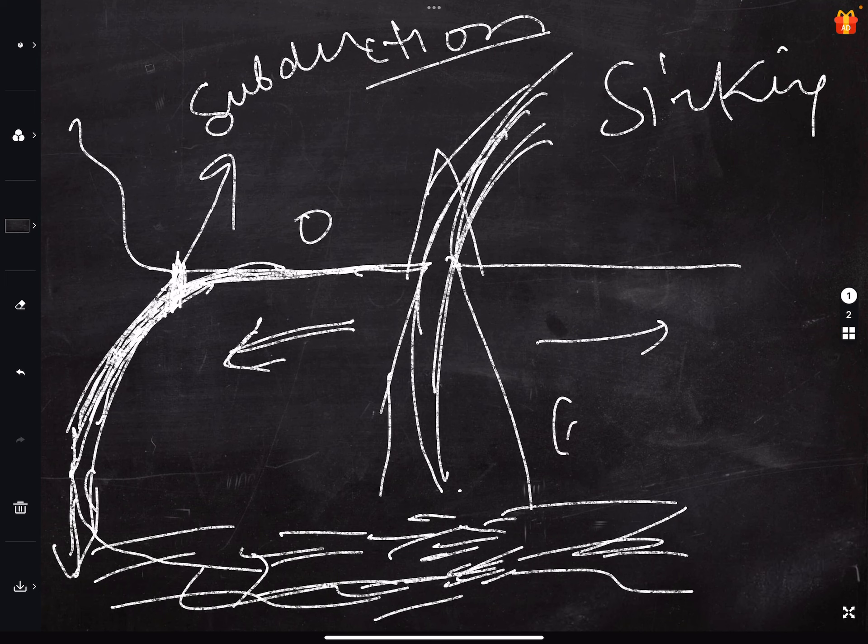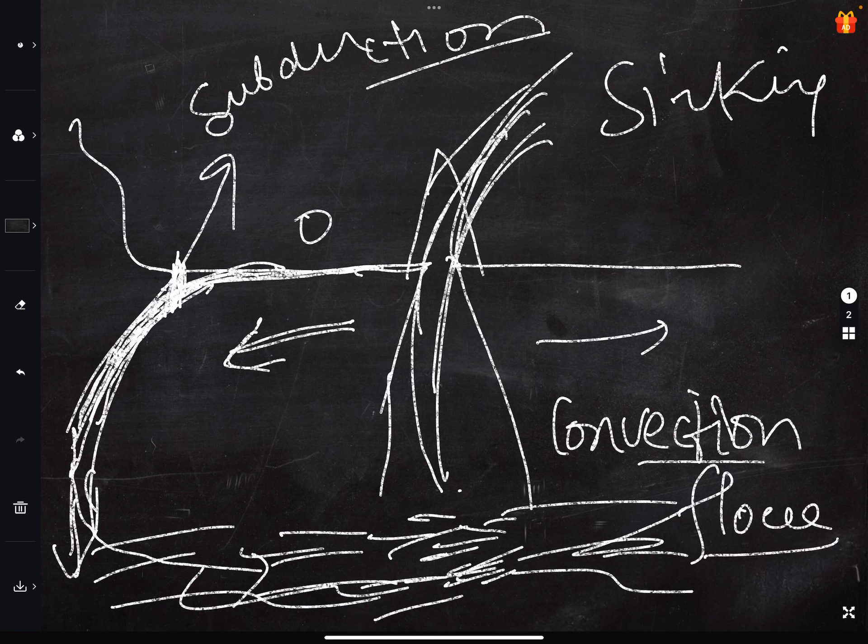We call it as convection flow. This is a flow of magma, convection flow. And because of this flow, this plate is moving. Some diverge. So the movement of the plate is because of this convection flow.